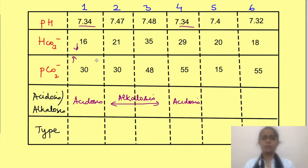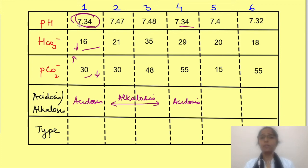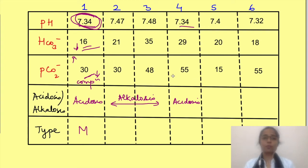In acidosis, either bicarbonate is less or pCO2 is more. In the first case, bicarbonate is less but pCO2 is also less. Remember, we define the disorder based on pH — so since bicarbonate is less, this is metabolic acidosis, and the low pCO2 is due to respiratory compensation. In the fourth scenario, pCO2 is more, so this is respiratory acidosis.